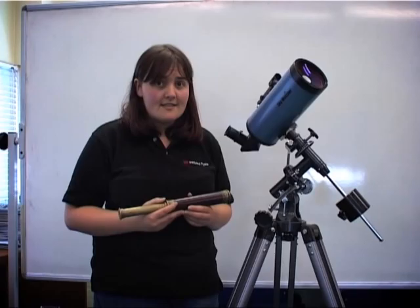The telescope you saw outside on the roof earlier has got a 35 centimetre primary mirror, and so has a lot of light collecting power, and therefore produces really good images at the end.